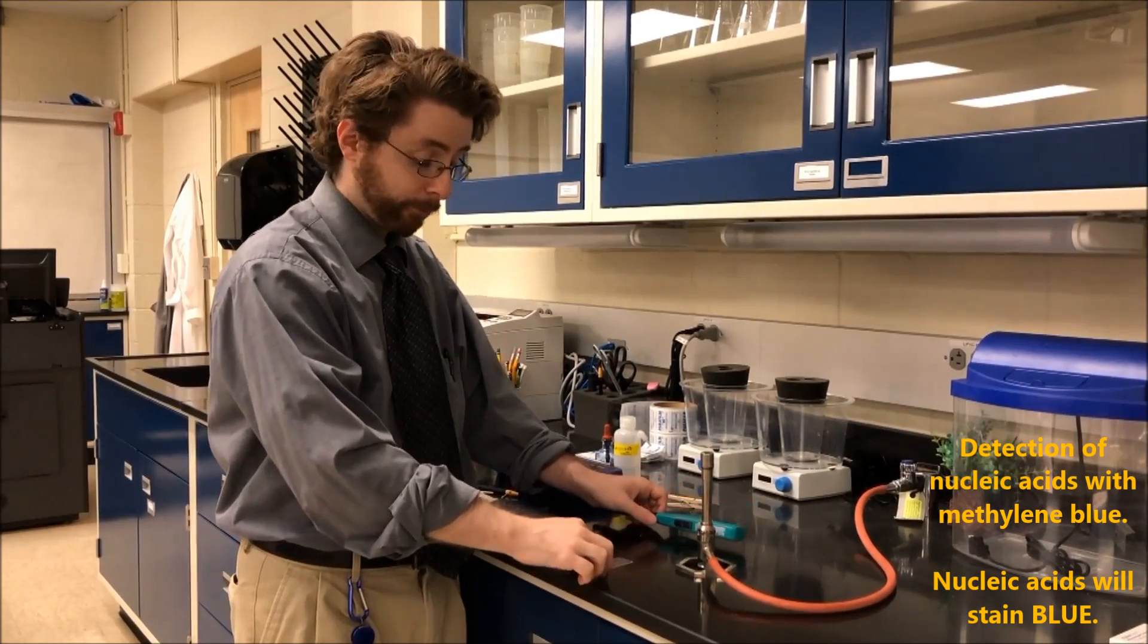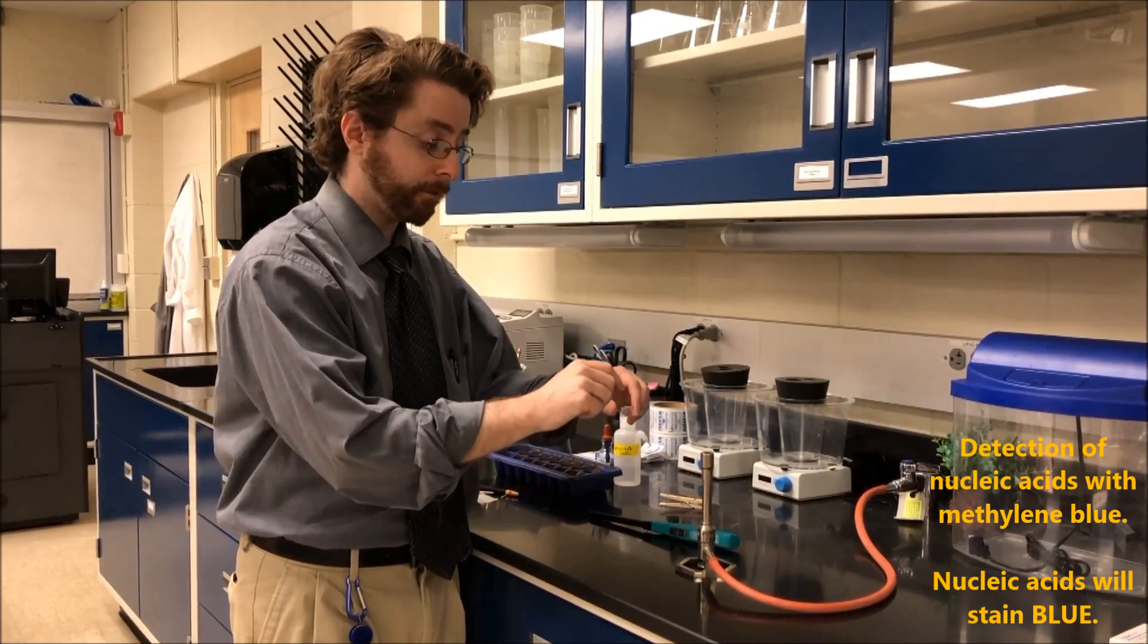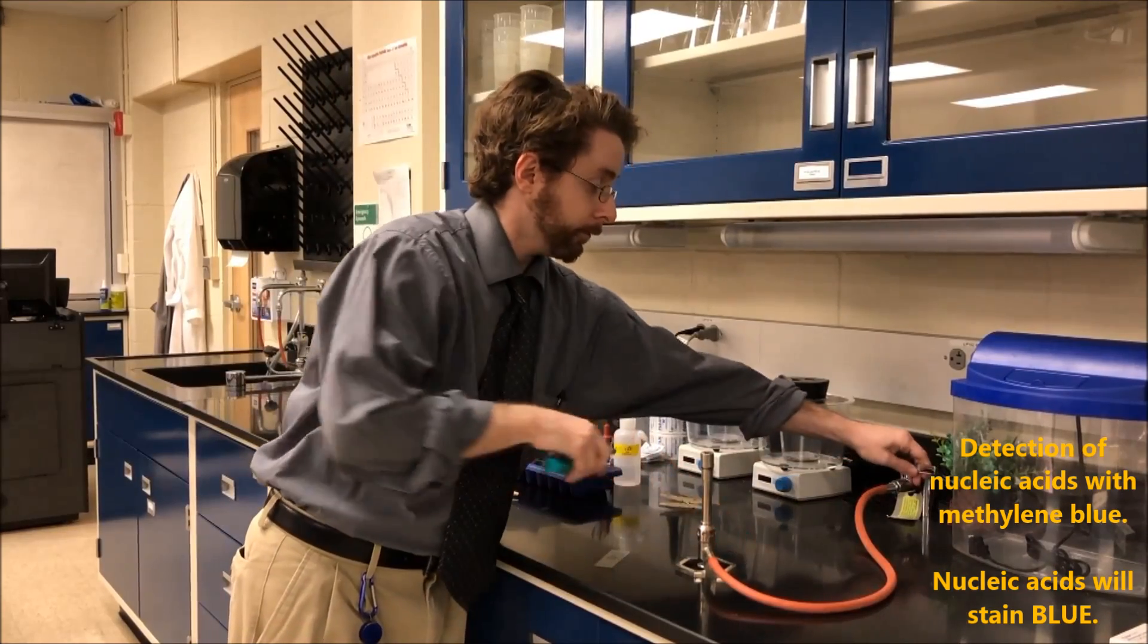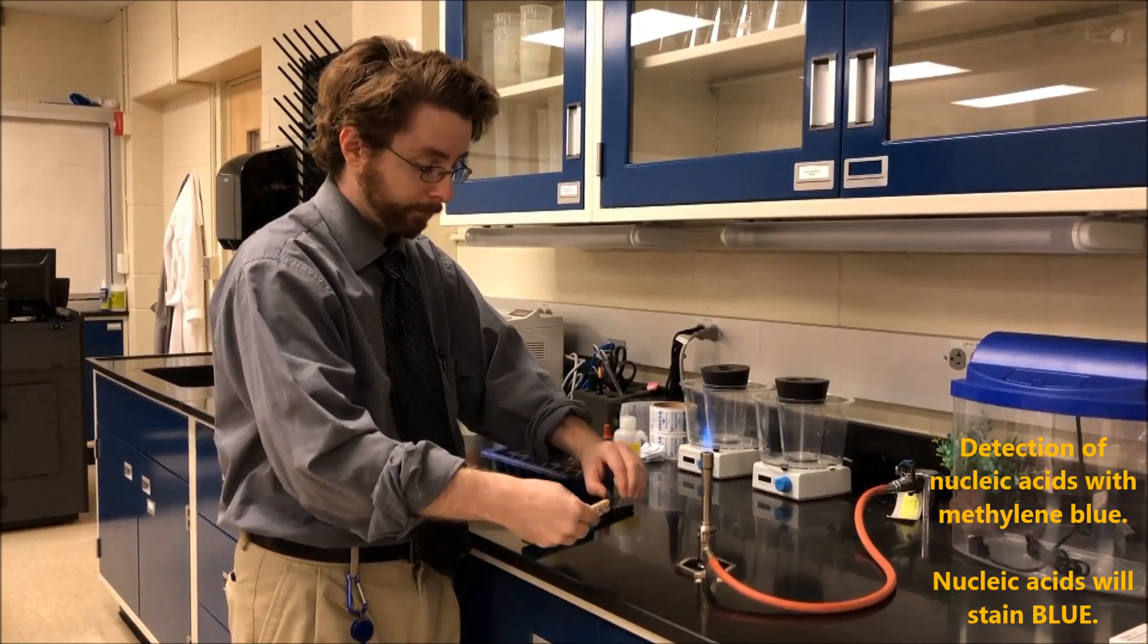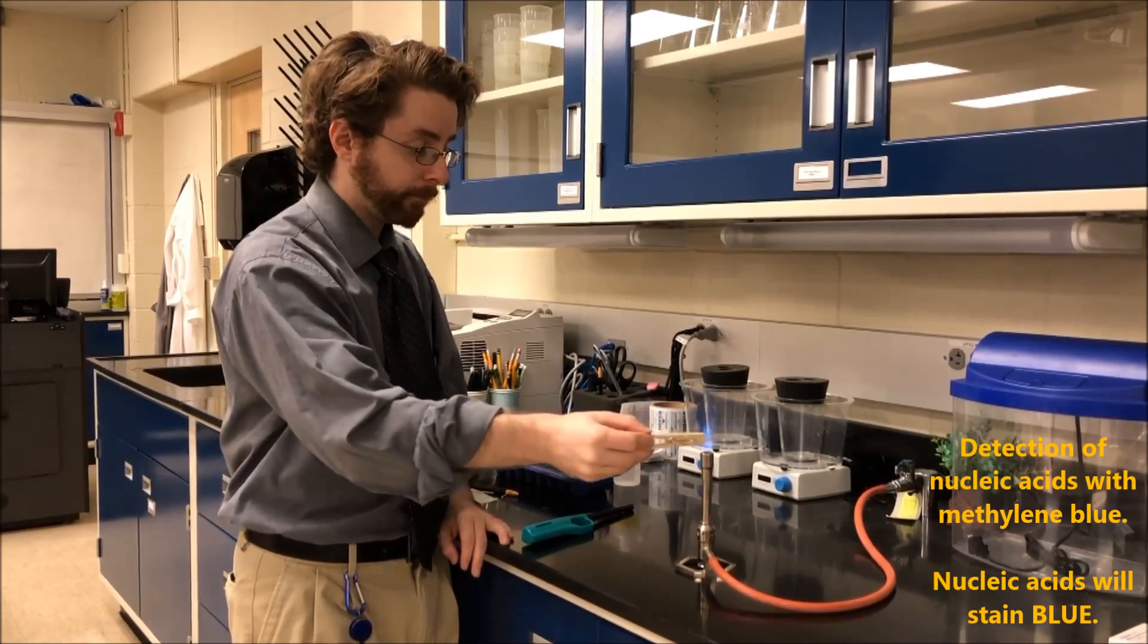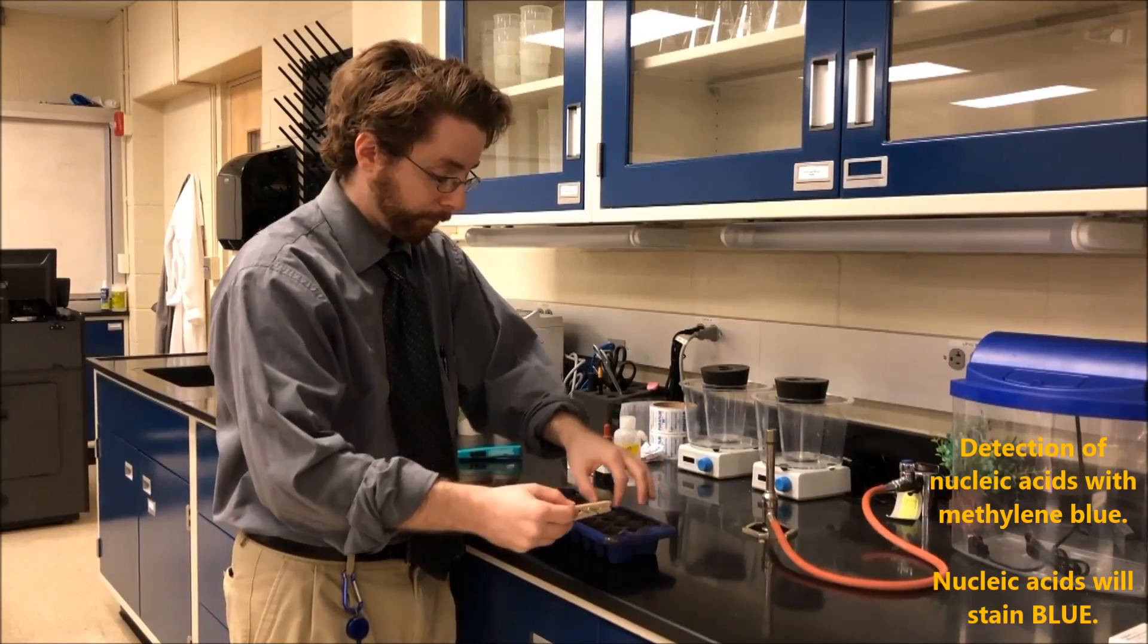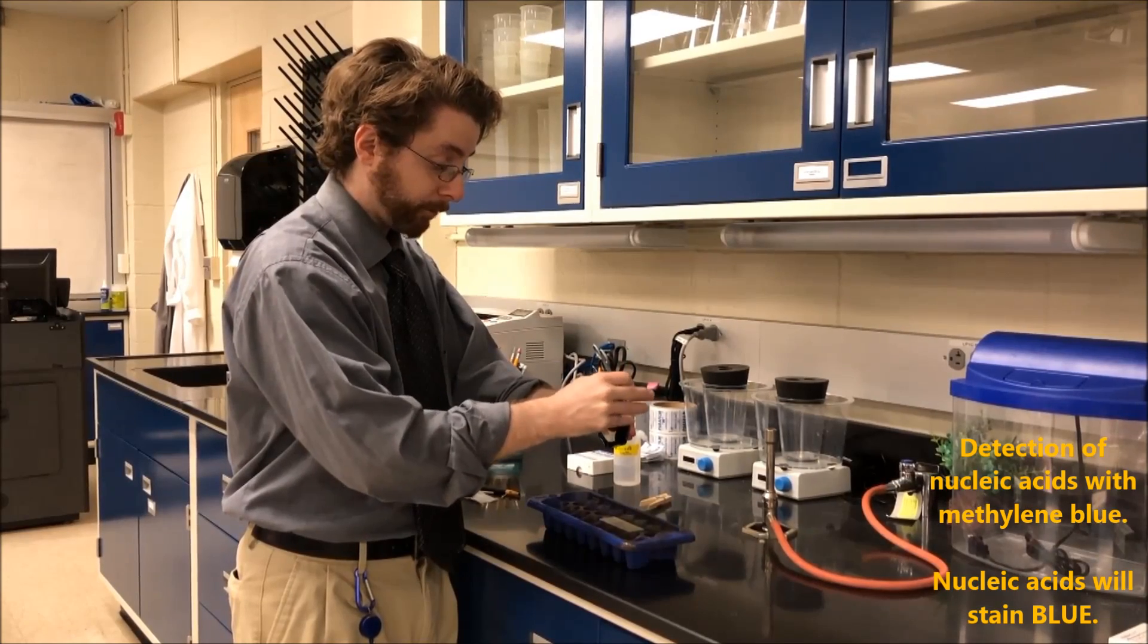And then we're going to heat fix it. So we're going to pass this slide through the Bunsen burner that's going to remove the water and fix the cells to the slide such that when I add the stain, the cells won't rinse off. So I'll turn on my gas, take my clothespin, and I'm going to pass it through the flame three times. Once. Twice. Thrice. I'm going to put my slide onto the staining tray, and then I'm going to add a few drops of methylene blue.